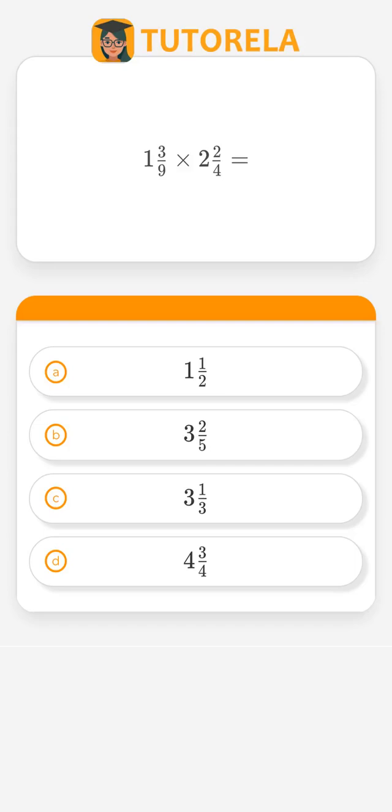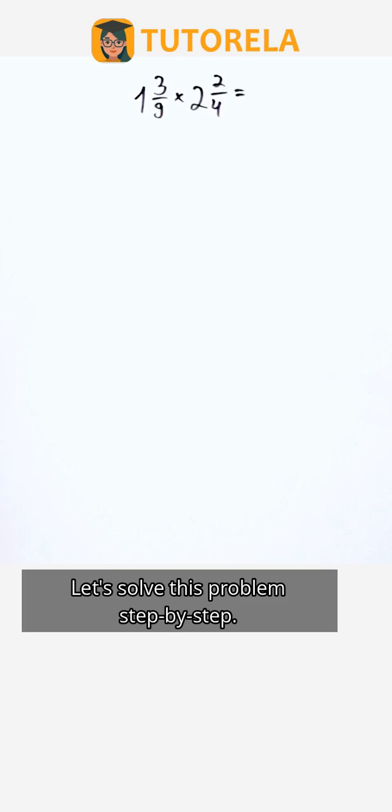1 and 3 ninths multiplied by 2 and 2 fourths equals. Let's solve this problem step by step.